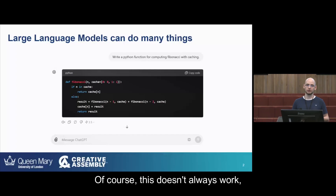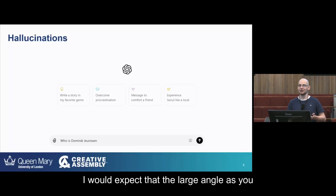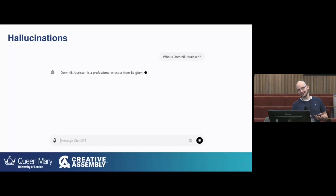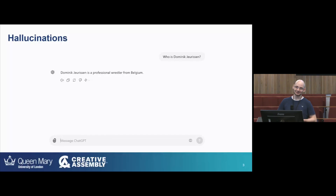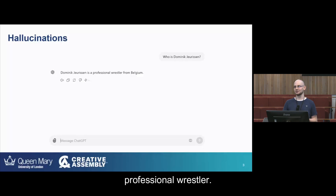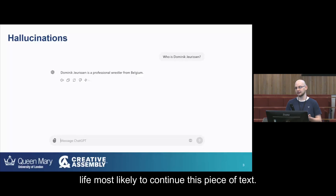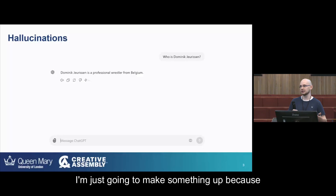Of course this doesn't always work, such as with hallucinations. In this case I ask it, 'Who is Dominic Jolson?' — that's of course me. I would expect the large language model to actually know this, but it tells me I'm a professional wrestler from Belgium, which sadly nobody like that exists. There's no Dominic Jolson who is a professional wrestler. But of course the large language model just predicts what is most likely to continue the text, and it decides to just make something up because that seems sensible.